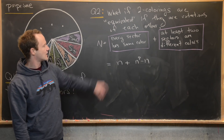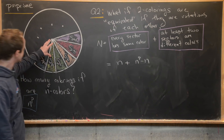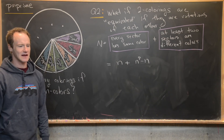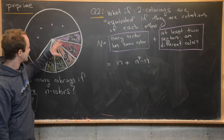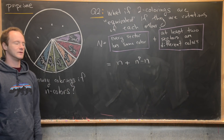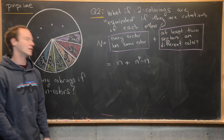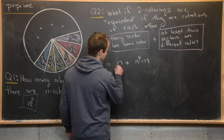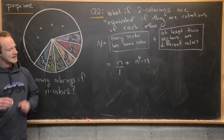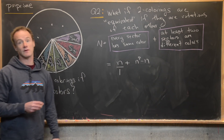If we've colored every sector the same, then any rotation gives us exactly the same coloring. If everything is all blue, there's only one way to do that. If everything is all green, there's also only one way to do that. So here we divide this by one — there's just one element from each of these equivalence classes.